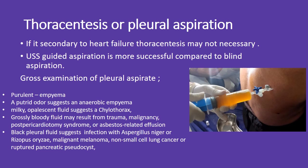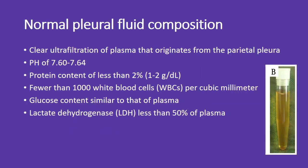Normal pleural fluid composition: it is a clear ultrafiltrate of plasma originating from the parietal pleura, with a pH of 7.60–7.64, protein content less than 2% (1–2 g/dL), fewer than 1,000 white blood cells (WBCs) per cubic millimeter, glucose content similar to plasma, and lactate dehydrogenase (LDH) less than 50% of plasma.